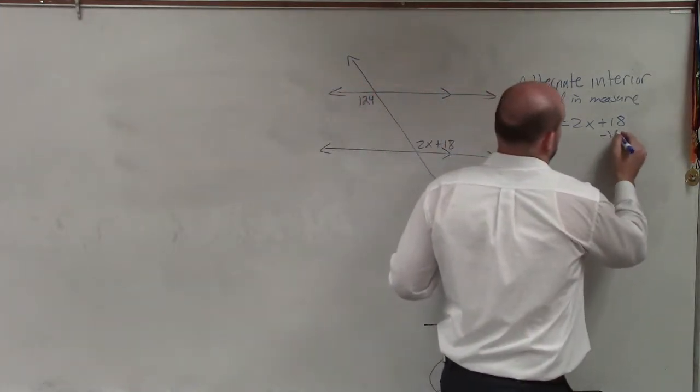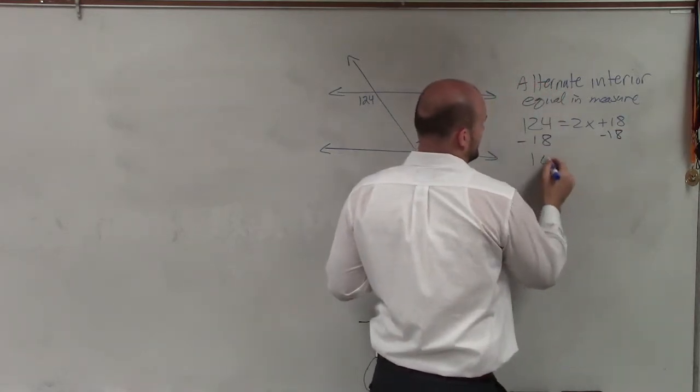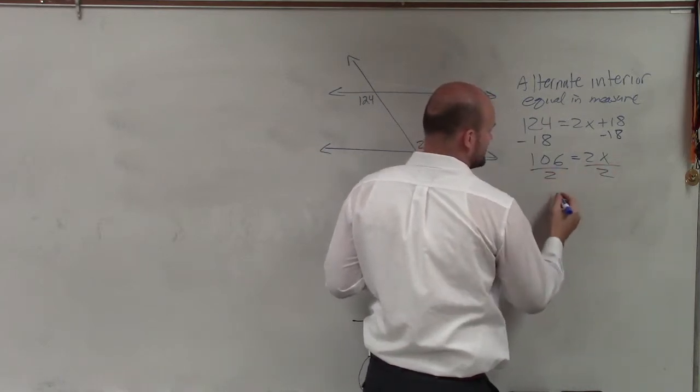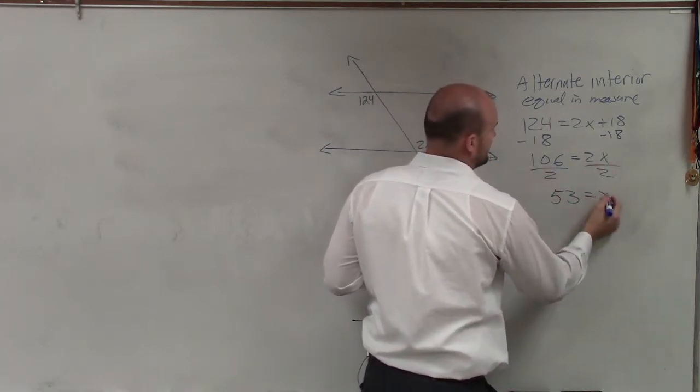To do that, I'll subtract 18 on both sides. Therefore I get 106 equals 2x. Divide by 2, and 53 equals x.